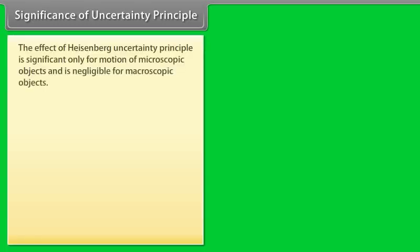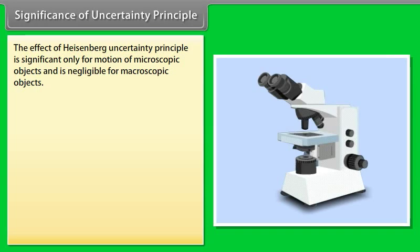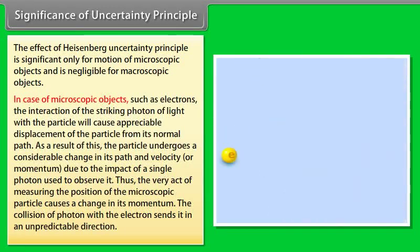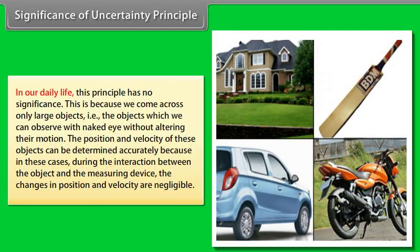The effect of Heisenberg's uncertainty principle is significant only for motion of microscopic objects and is negligible for macroscopic objects. In the case of microscopic objects such as electrons, the interaction of the striking photon of light with the particle will cause appreciable displacement of the particle from its normal path. As a result, the particle undergoes a considerable change in its velocity or momentum due to the impact of a single photon used to observe it. Thus, the very act of measuring the position of the microscopic particle causes a change in its momentum. The collision of a photon with the electron sends it in an unpredictable direction.